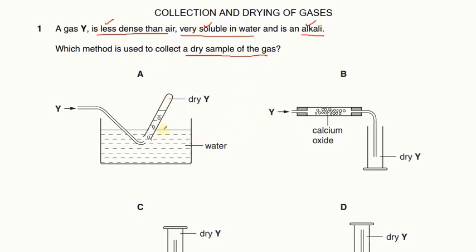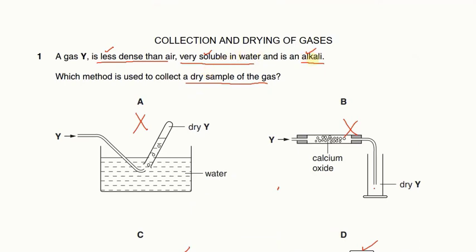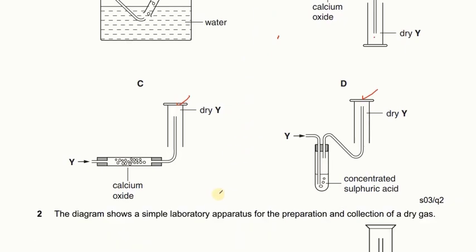Since the gas is very soluble, we cannot use method A — the gas will dissolve and will not be collected. The gas is less dense, so we cannot use the method for heavier gases. We can use method C because the gas is lighter. The gas is an alkali, so we need an alkaline drying agent. Concentrated sulfuric acid is an acid and will react with the gas, so we will not use it. The answer is C, which uses calcium oxide — an alkaline drying agent that will not react with the gas.